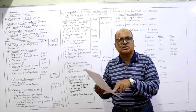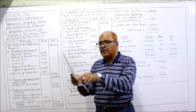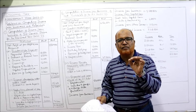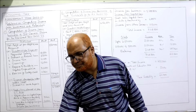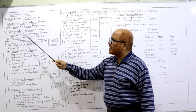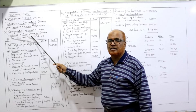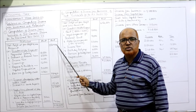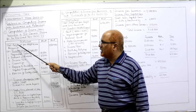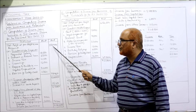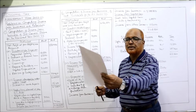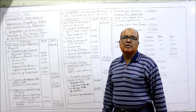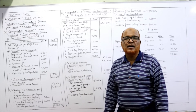First, we begin with the profit given as per the profit and loss account. The net profit is 5,50,990. This is the profit as per the P&L account. Our computation of income from business of Sri Ganesh Sharma for the assessment year starts with: Net Profit as per Profit and Loss Account — 5,50,990. The second thing we have to do is add back the inadmissible expenses.